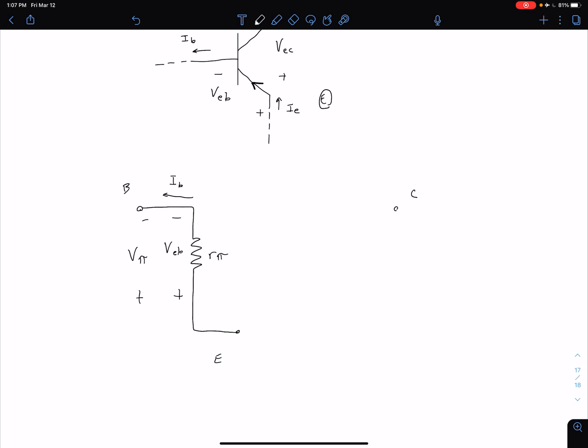So between our collector and emitter, we're still going to have our dependent current source. But now, instead of flowing down from the collector to the emitter, it's flowing from the emitter to the collector, flowing upward the way I've drawn it here. We can write this as gm*vπ. Just like we saw for our NPN case, we have a few other ways we can write this. We could write this as gm*vEB. We could write this as β*ib, lowercase ib.